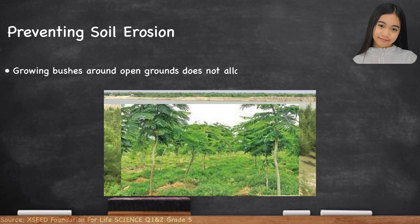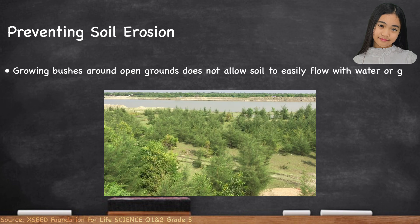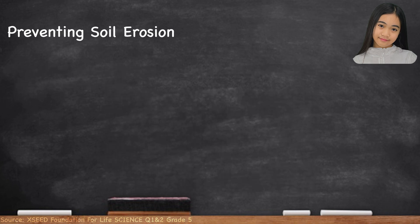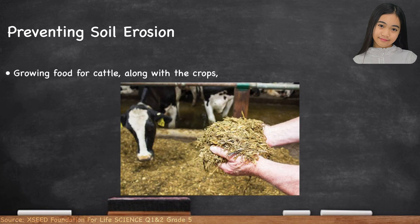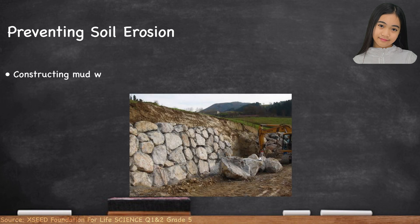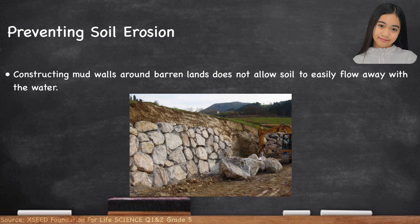Growing bushes around open grounds does not allow soil to easily flow with water or get blown away by the wind. Growing food for cattle along with the crops helps to prevent overgrazing. Constructing mud walls around barren lands does not allow soil to easily flow away with the water.